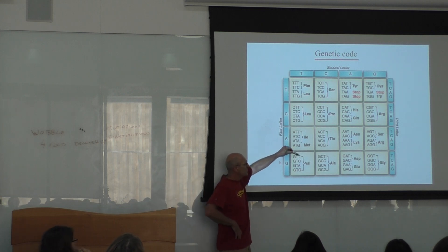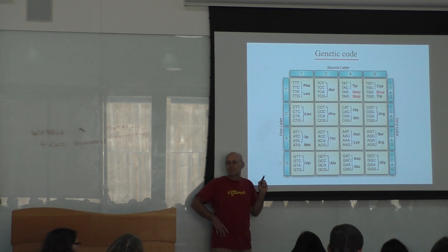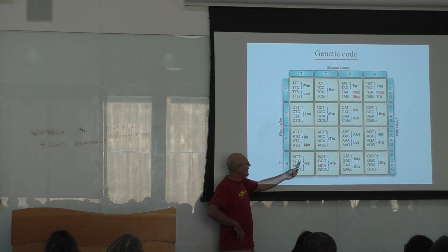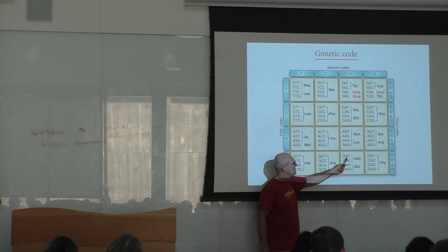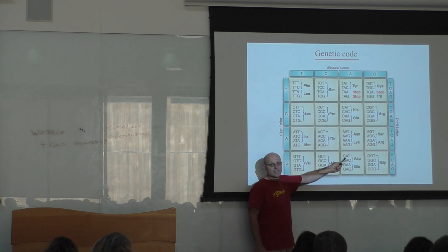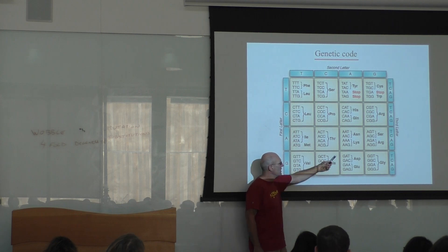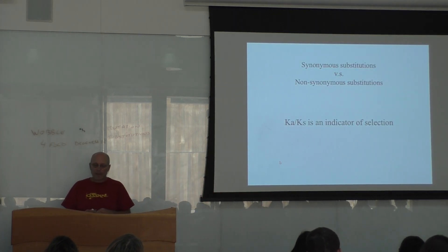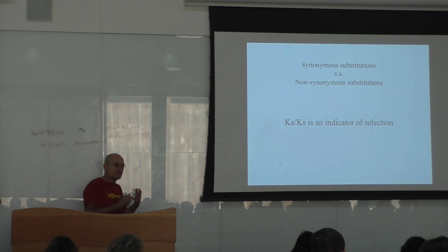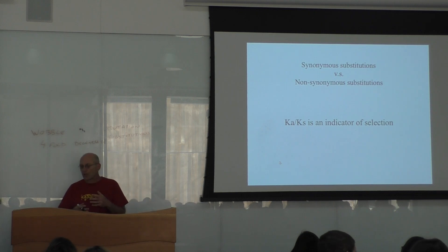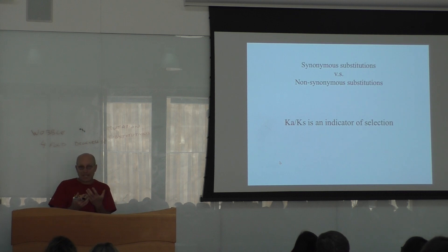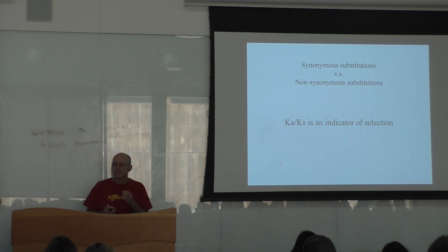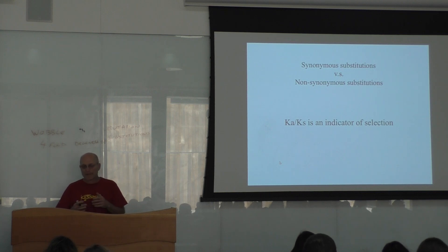For example, if there is a mutation from T to C in the third codon position, this would be a synonymous substitution because it does not change the amino acid. If instead you change T to A in the second codon position — going from GTT to GAT, which encodes aspartic acid — that would be a non-synonymous substitution. The ratio between synonymous and non-synonymous substitutions is an indicator of selection. If the ratio KA over KS is high, meaning you are changing many amino acids, there may be a lot of selection. If you don't change very many amino acids, there is not much selection.